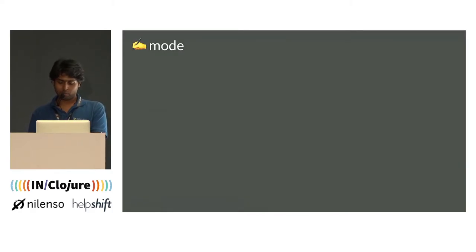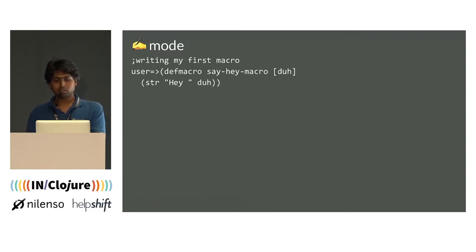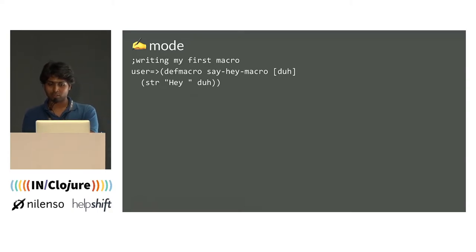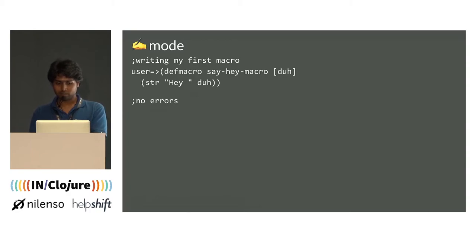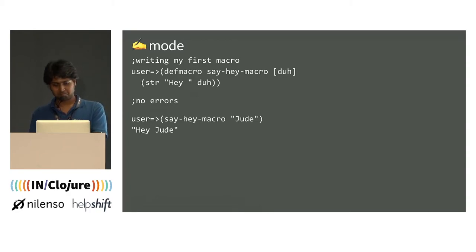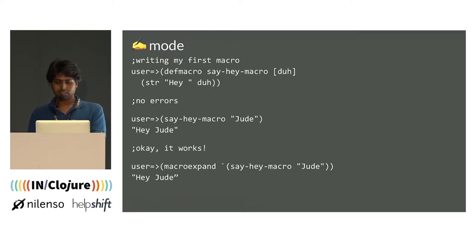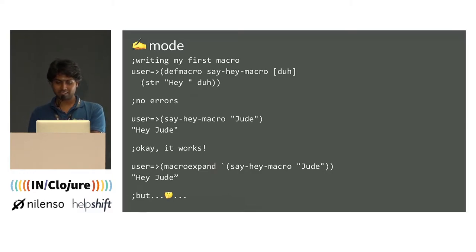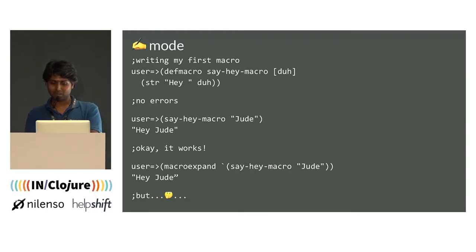Getting into writing mode: I started off by writing my first macro — `say-hey`. Whatever is passed along, it will say 'hey' plus that. When I execute it there are no errors. When I say 'jude', it says 'hey jude'. Awesome, it works. Let's try macro-expanding that. This looks okay but doesn't really feel like a macro — it just looks like one and feels like one, but not really a macro.